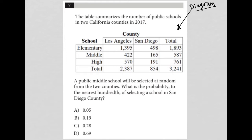I see that there are schools here — elementary school, middle school, high school, and then a total row. And then I have two counties: Los Angeles County, San Diego County, and my total column over here.